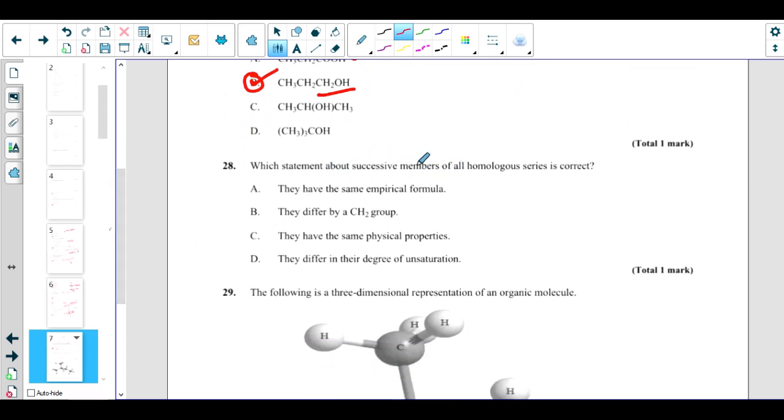Which statement about successive members of homologous series is correct? This is a repetitive question. I think we have done this before - CH2 group.